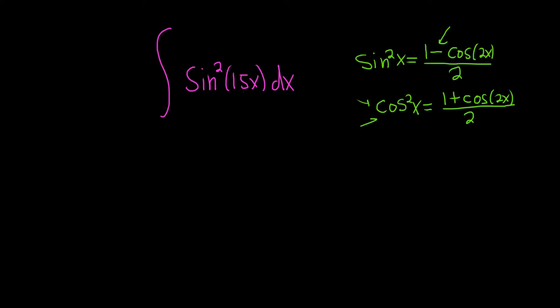In this problem, we're replacing x with 15x. So sine squared of 15x, using the formula, will be equal to 1 minus cosine of 2 times 15x over 2, just replacing the x with a 15x. And that's going to give us 1 minus cosine of 30x, all divided by 2.